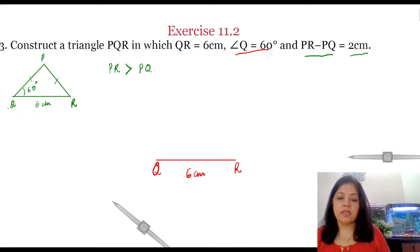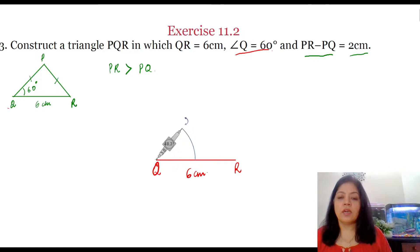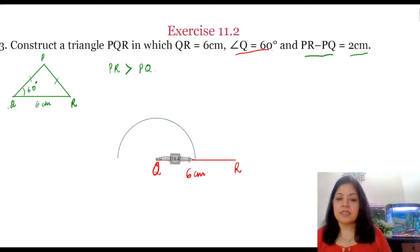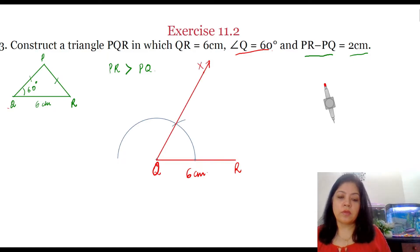Now, angle Q is equal to 60 degrees. With the help of a compass, we will draw a 60 degree angle. With any radius, we will draw an arc which touches the line QR at a point, and with the same radius, we will place the compass at this point and cut the arc previously drawn. Draw a ray QX passing through this point of intersection. So this angle is a 60 degree angle.